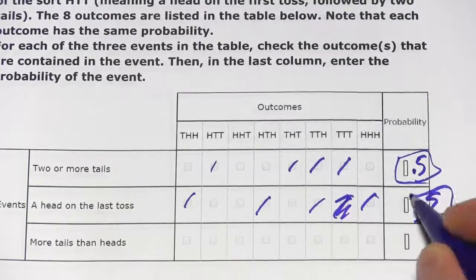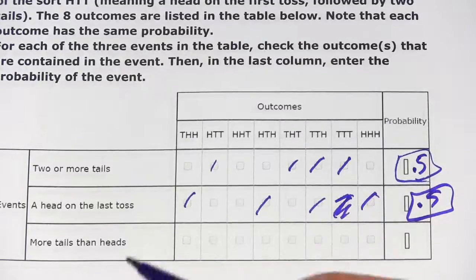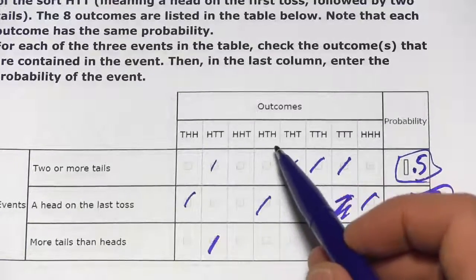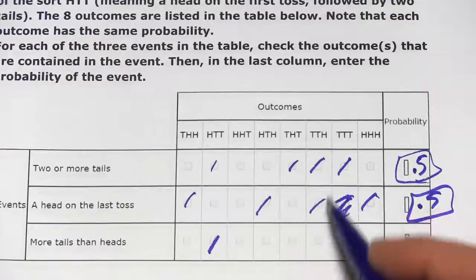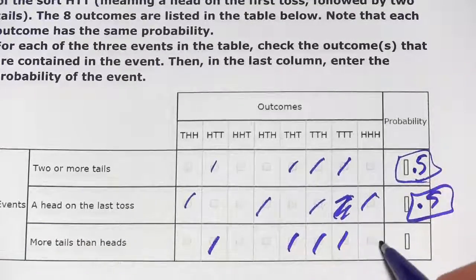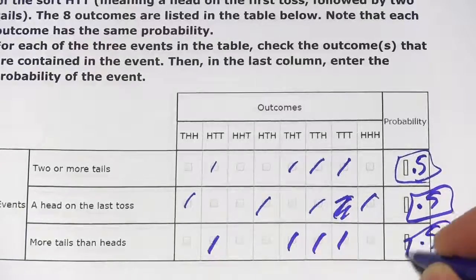And let's look for this last one, more tails than heads. [Going through each outcome.] And again, it's four out of eight or 0.5.